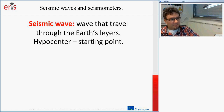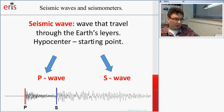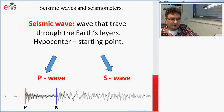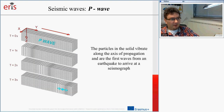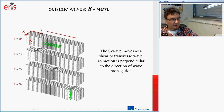Now let's say more about seismic waves. A seismic wave travels through the Earth's layers from the starting point — the source — to seismic stations. We have two basic body seismic waves: the P wave and the S wave. The P wave is the primary wave — the first wave recorded on a seismogram. The S wave is the secondary wave, recorded second. The P wave causes particles in the solid to vibrate along the axis of propagation, while the S wave moves as a shear or transverse wave, with motion perpendicular to the direction of propagation. P waves travel faster than S waves.